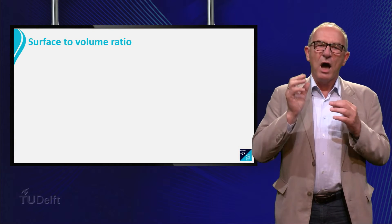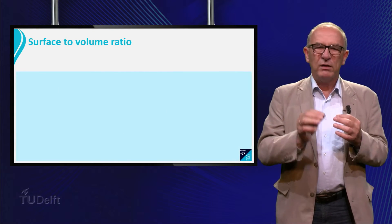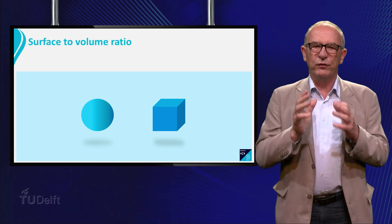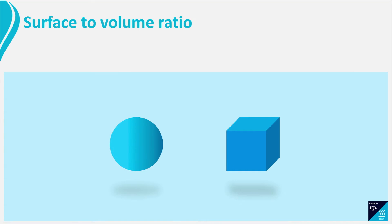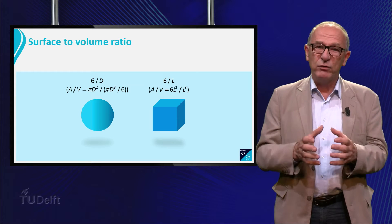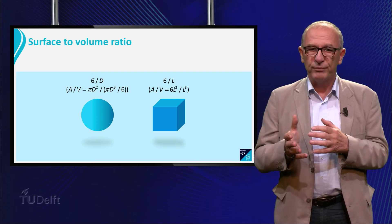To give you a feeling, consider a sphere and a cube. The ratio of the surface area to the volume of a sphere becomes 6 over D, and for a cube this becomes 6 over L. In both cases, the volume increases faster than the surface area, which means that it becomes more difficult to cool down or to heat up the sphere or the cube.